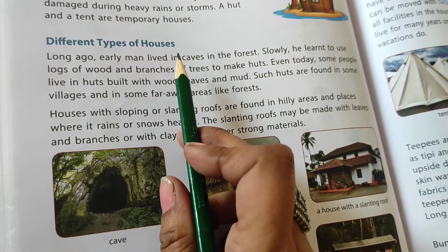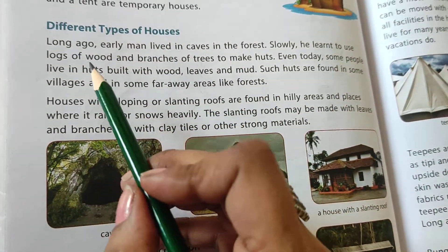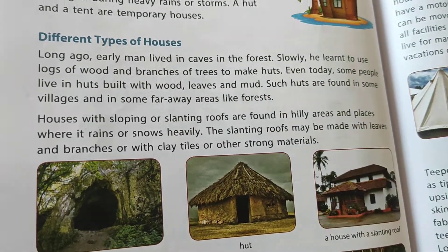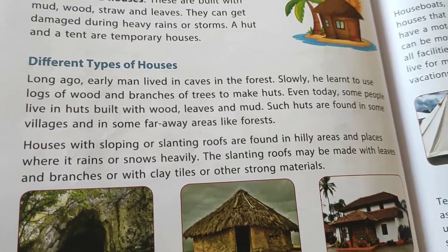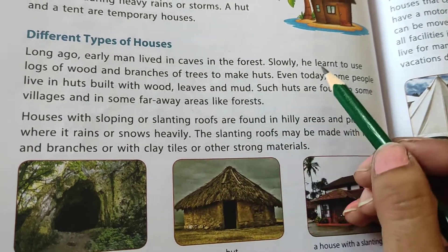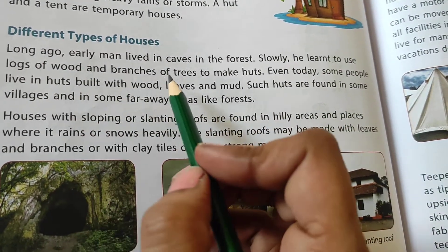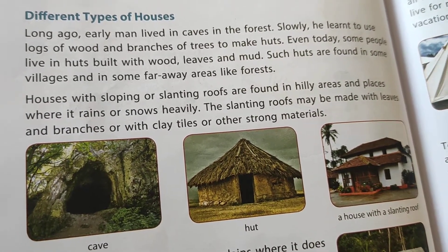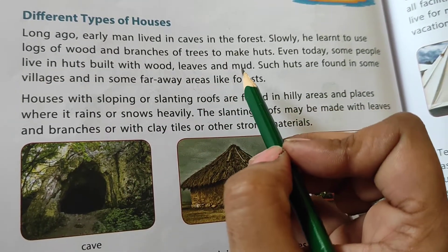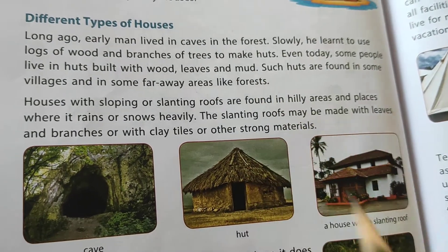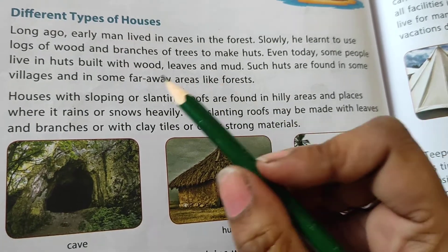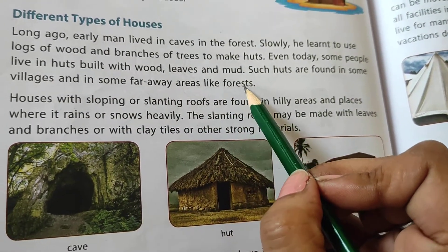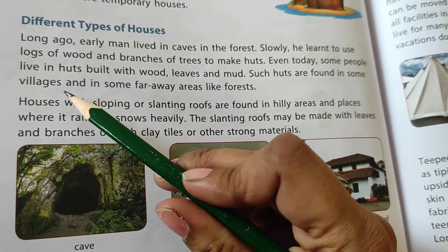Next is different types of houses. अब houses की different types होती हैं. Long ago, early man lived in caves in the forest. बहुत सालों पहले बेटा, जब घर नहीं होता था, जब इनसान जंगलों में रहता था, तो वो गुफा बना के रहता था — caves बना के रहता था. Slowly he learned to use logs of wood and branches of trees to make huts. फिर धीरे-धीरे उसने लकड़ियों से और पेड़ों की टहनियों से घर बनाना सीख लिया. Even today some people live in huts built with wood, leaves and mud — ऐसे rural areas या tribal areas हैं जहाँ पर लोग झोपड़ियाँ बना के रहते हैं. Such huts are found in some villages and in faraway areas like forests.